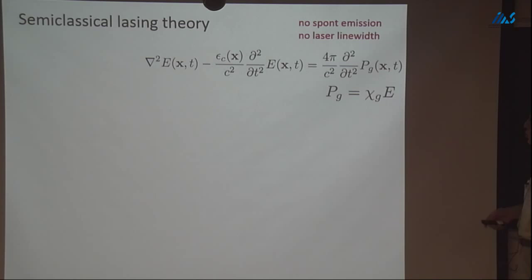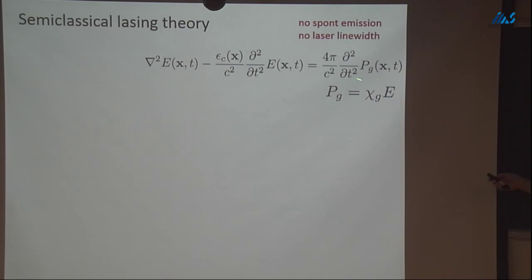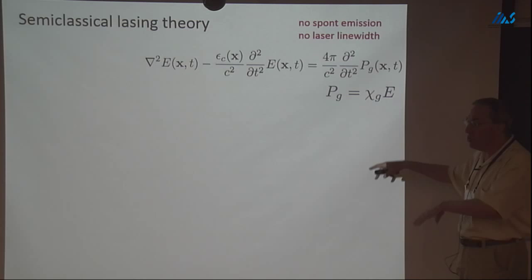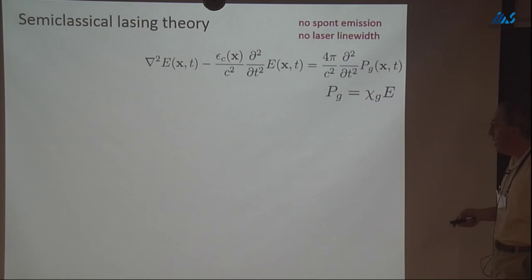When you neglect quantum effects, this is described through semi-classical lasing theory. You write down Maxwell's equations with the polarization of the gain medium as a source for radiation. In a textbook, they introduce resonator modes, often approximate them as Hermitian modes, expand in those modes, and work only in time — that's where they start to go wrong. The fundamental problem is: you've got some cavity, possibly very complicated, with a gain medium inside and air outside.